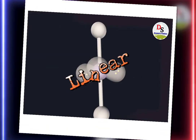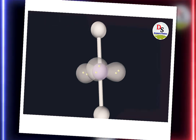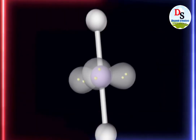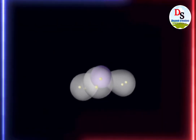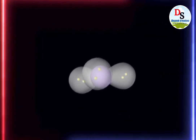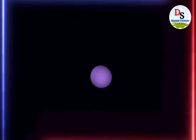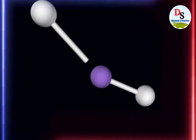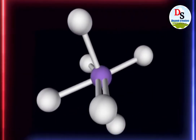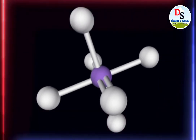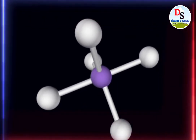It is the linear structure of a molecule. It has 2 bond pairs and 3 lone pairs.